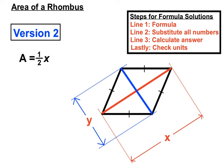Area equals half of the X diagonal times the length of the Y diagonal. So we take the diagonals, we multiply them together and we halve it. So that's version 2 of the rhombus when we are given the lengths of the diagonals.